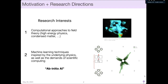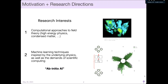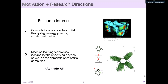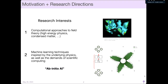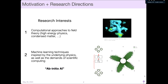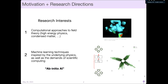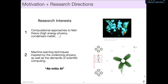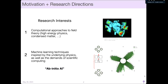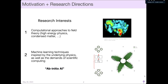Just some background on me: I'm not an applied mathematician by training — I'm technically a physicist. I'm interested in problems in computational approaches to quantum field theory, things in high energy physics, and condensed matter. In addition to that, I'm interested in developing machine learning techniques inspired by the underlying physics and scientific computing demands. Some people call this ab initio AI.